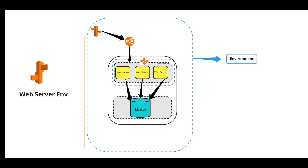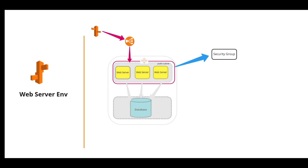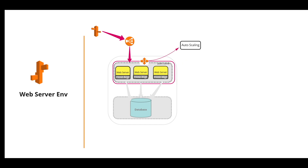The overall resources that facilitate a working application are called an environment. The AWS resources created for a web server environment include the Elastic Load Balancer, Auto Scaling Group, and one or more EC2 instances. When an application receives client requests, Amazon Route 53 sends the request to the Elastic Load Balancer. Route 53 is a global service for DNS, and the load balancer shares the request among the EC2 instances using a predefined algorithm for equal distribution. Beanstalk creates a minimum number of EC2 instances to run your application, each part of a Security Group acting as a firewall.